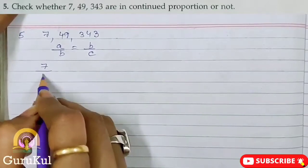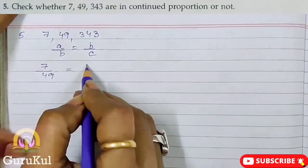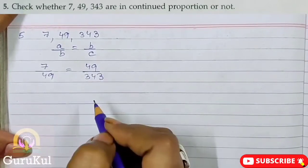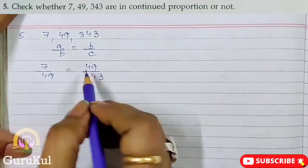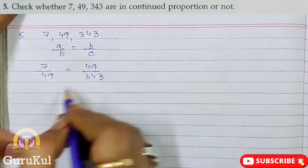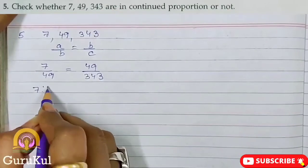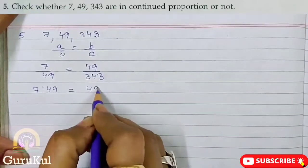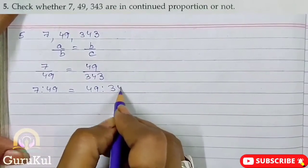7 by 49 is equal to 49 by 343. Right? This can be written in this way: 7 is to 49 is equal to 49 is to 343.